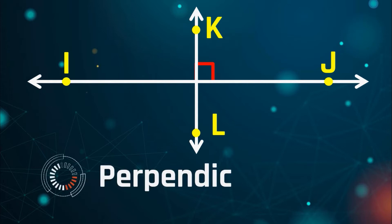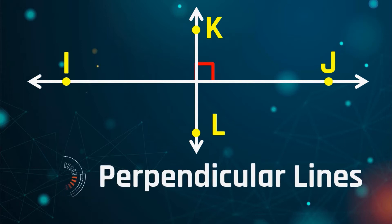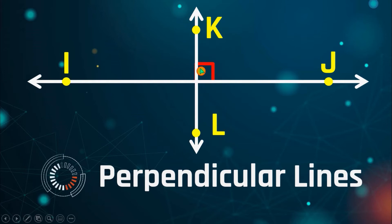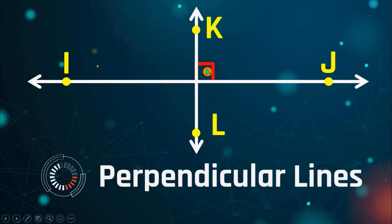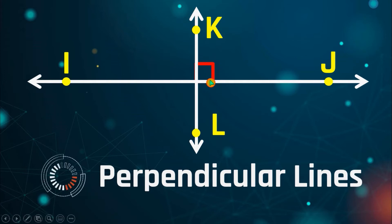When we say perpendicular lines, you have two lines that intersect with each other, however in this case it forms exactly a 90-degree measure of angle. You can clearly see that it forms a 90-degree angle because of a special symbol — a small square — right here.